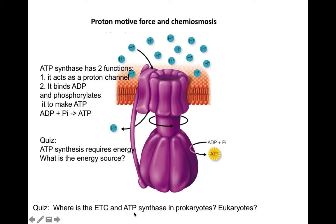In prokaryotes and bacteria, the electron transport chain and ATP synthase are in the cell membrane. In eukaryotic cells, the electron transport chain and ATP synthase are located in the inner mitochondrial membrane, which evolved from the primitive bacterial cell membrane according to the endosymbiotic theory.